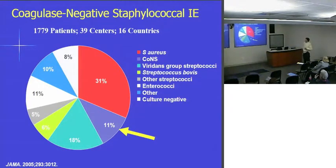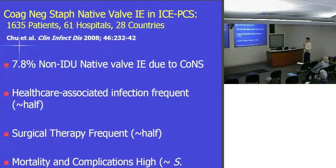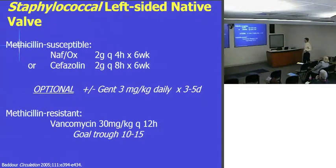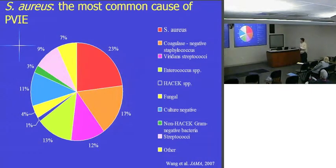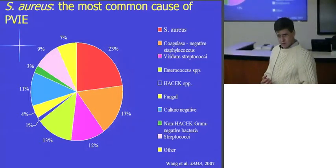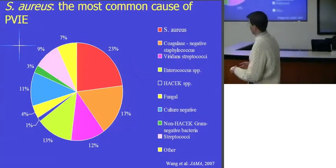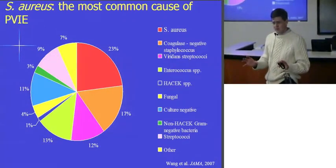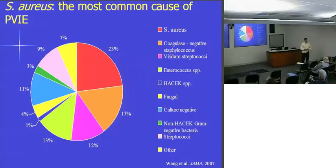Treatment of native valve endocarditis is well established — these are data in treatment guidelines that I helped co-author a few years ago. Also from ICE data: not only is staph aureus the most common cause of endocarditis in native valves, but it's also the most common cause of endocarditis in prosthetic valves. This is a sea change, a fundamental shift from our traditional understanding of endocarditis. It's relevant because staph aureus is worse than what we traditionally understood. Traditionally, the most common pathogen in prosthetic valve endocarditis was coagulase-negative staphylococci, a less virulent cousin of staph aureus.